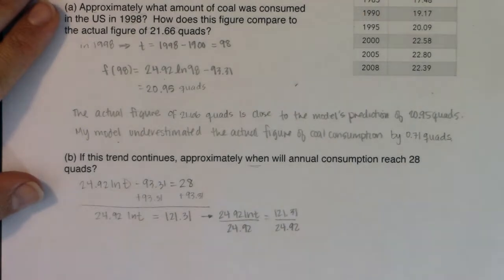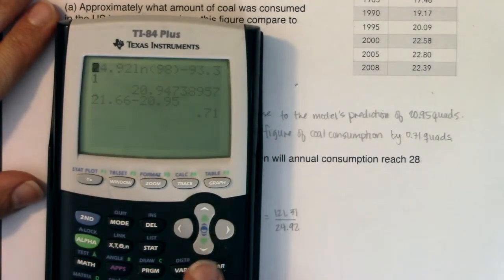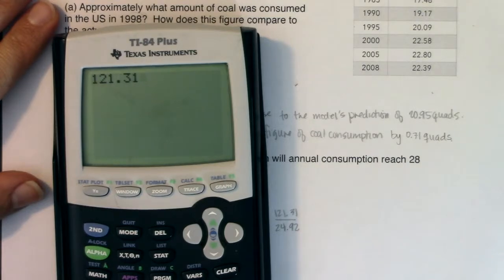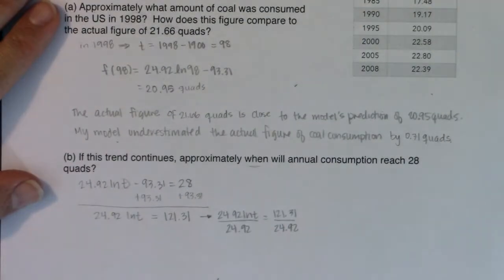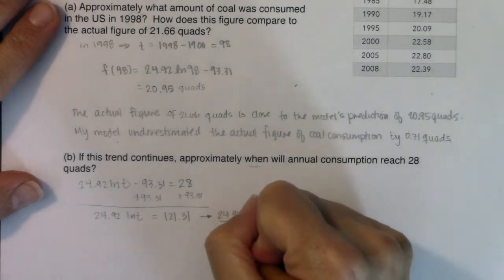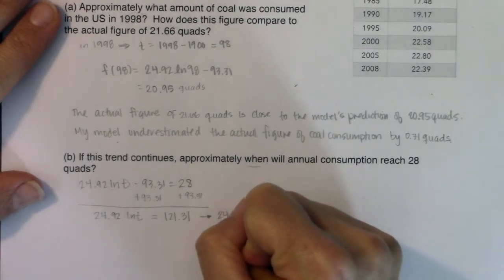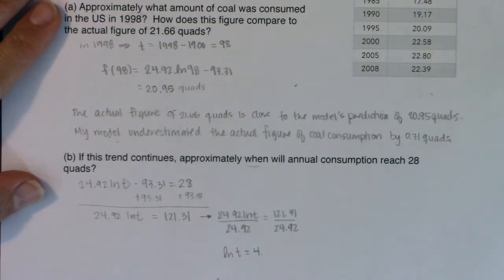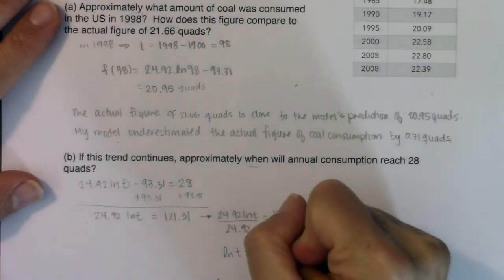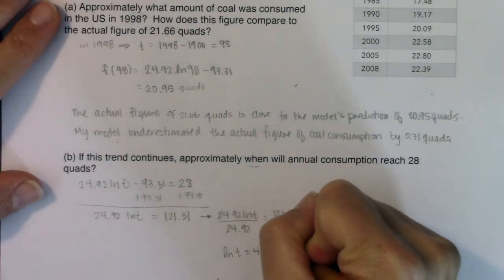And let's see what we're working with. Now I do need my calculator. So I'm going to go 121.31 and I'm going to divide that by 24.92. It looks like I have about 4.868. So we know t is, excuse me, ln(t) is equal to 4 point, and it was, was it 8, 6, 8 or 6, 8, 6? It was 8, 6, 8.